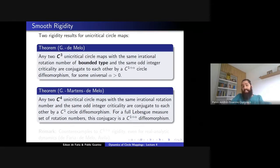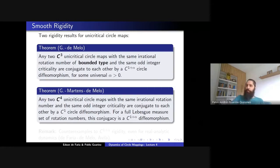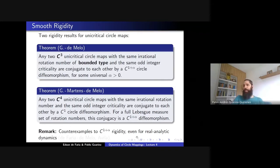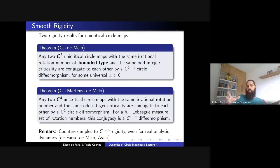You might say maybe it's always C^{1+α}, but the answer is no. There is a detailed construction of counterexamples — Edson and Wellington constructed examples in the C^∞ case, and Arturo Avila constructed examples in the analytic class. So you can have two real analytic critical circle maps with a single critical point conjugate by a C¹ diffeomorphism, but the conjugacy is not C^{1+α} for any α.